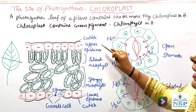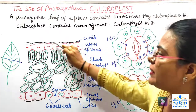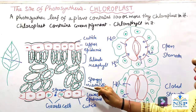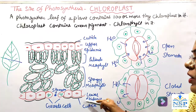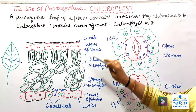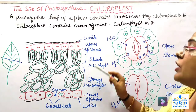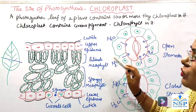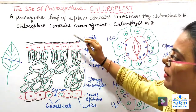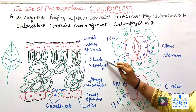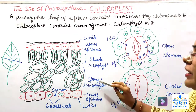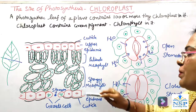जब आप leaf का transverse section करते हैं तो internal light microscope से ऐसा structure दिखाई देता है। सबसे ऊपर upper epidermis होती है जिसके ऊपर cuticle की layer होती है। फिर mesophyll cells होती है, और फिर lower epidermis — lower epidermis के नीचे भी cuticle की layer होती है जो transpiration से loss of water को बचाती है। Mesophyll cells two types की होती हैं — लंबी-लंबी palisade mesophyll cells upper epidermis के नीचे, और rounder spongy mesophyll cells lower epidermis के ऊपर।